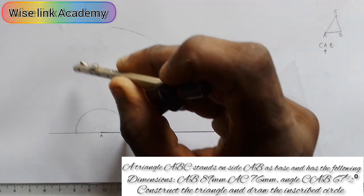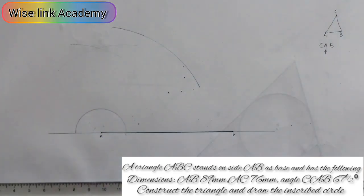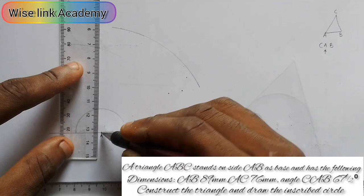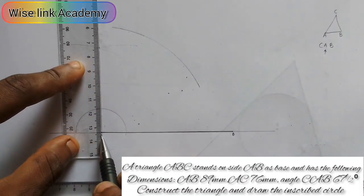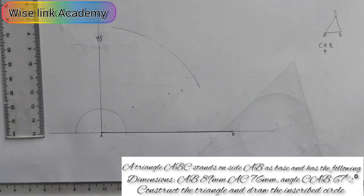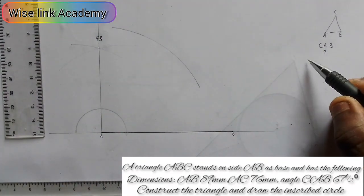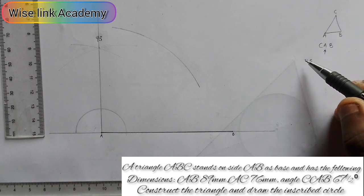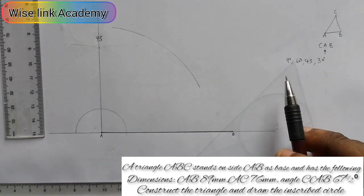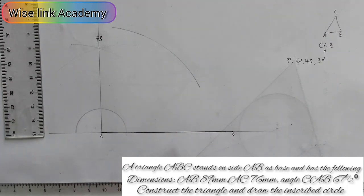My next step: take the compass at this point, extend it to any radius of your choice, strike an arc here — that's point one — come to this point and strike another arc. Where they intersect is at this point, so I will draw a vertical line through those points. This line I've drawn is angle 90 degrees. Now, 67.5 degrees falls between 90 and 60, so I need to construct 60 degrees.